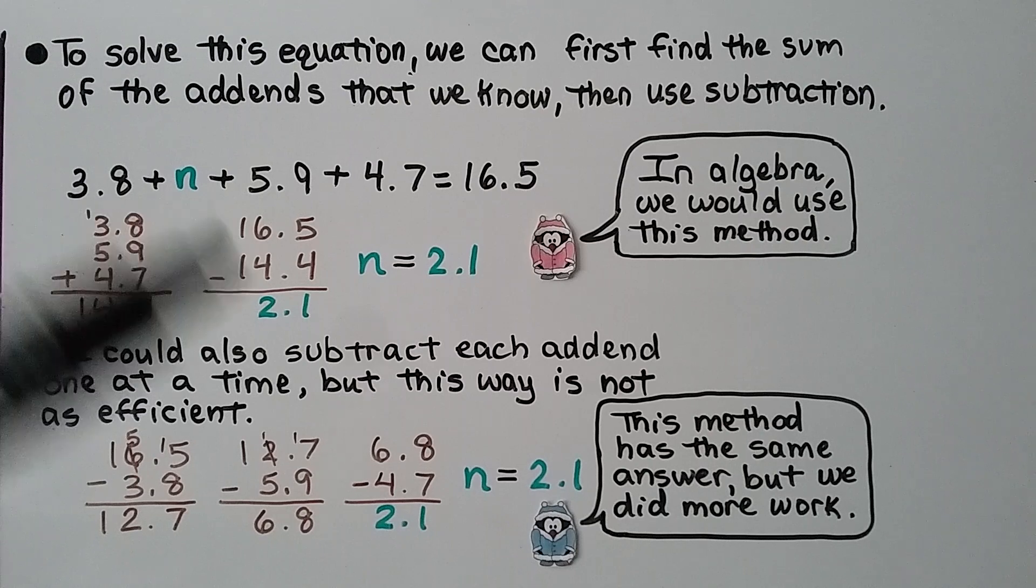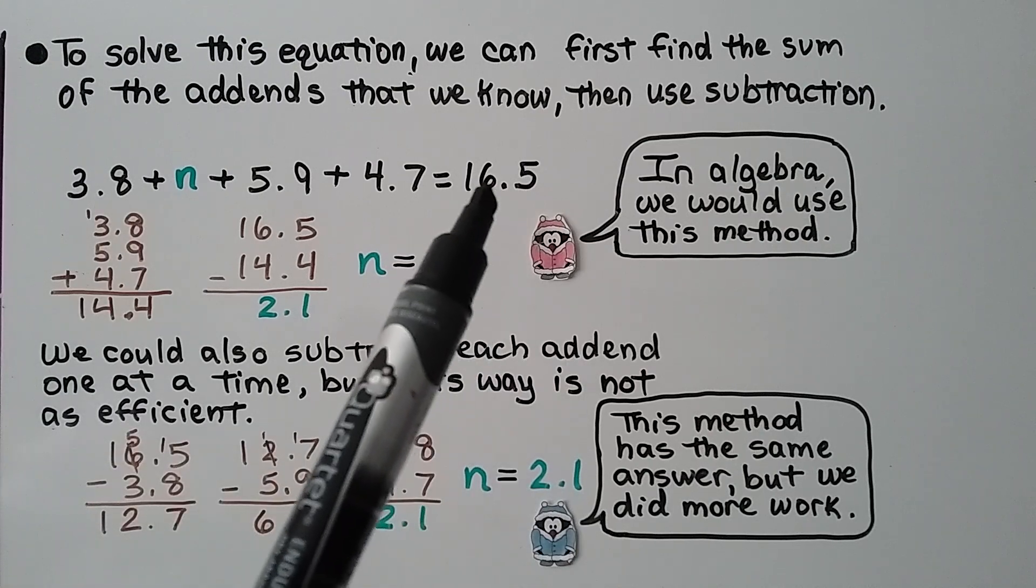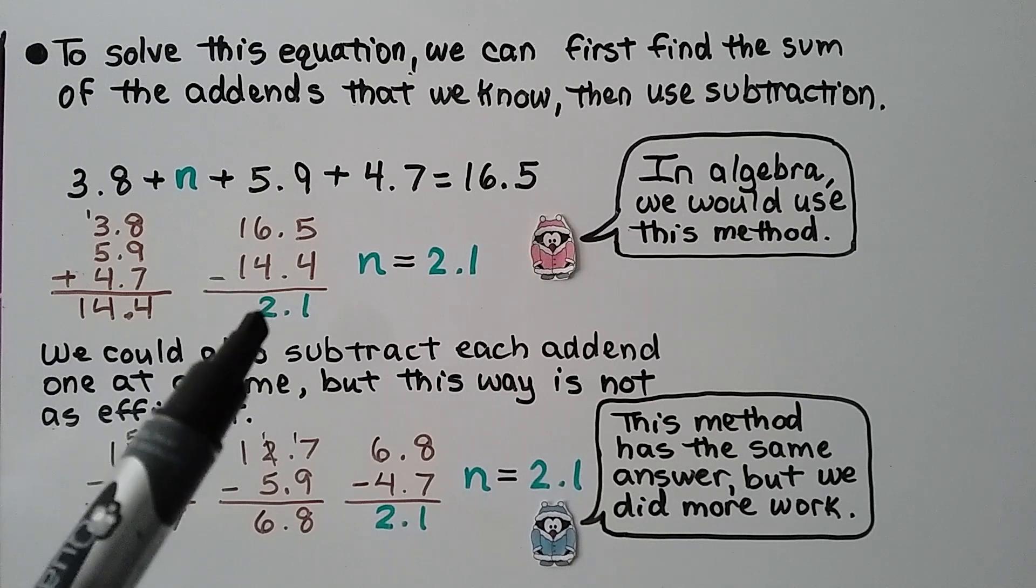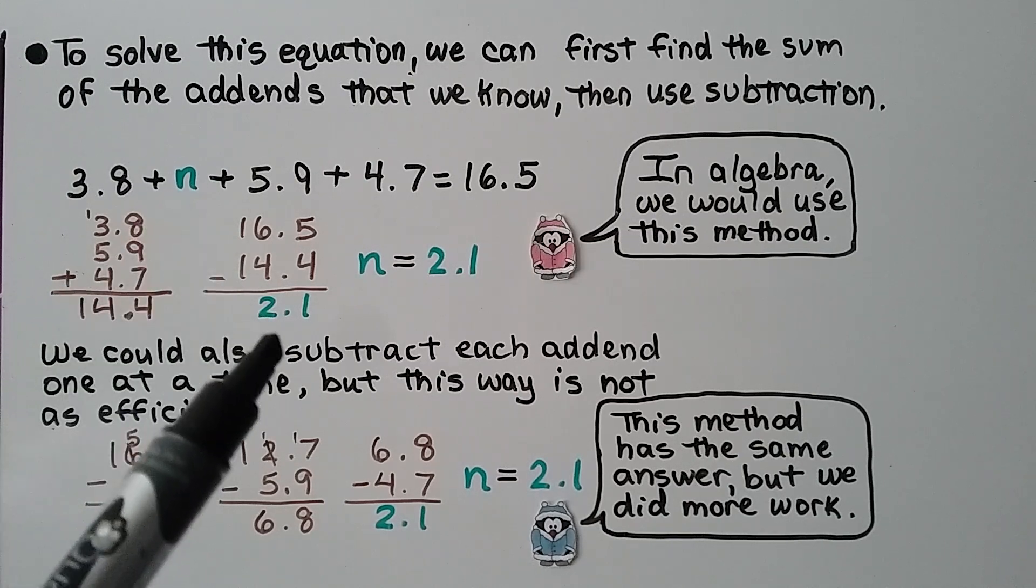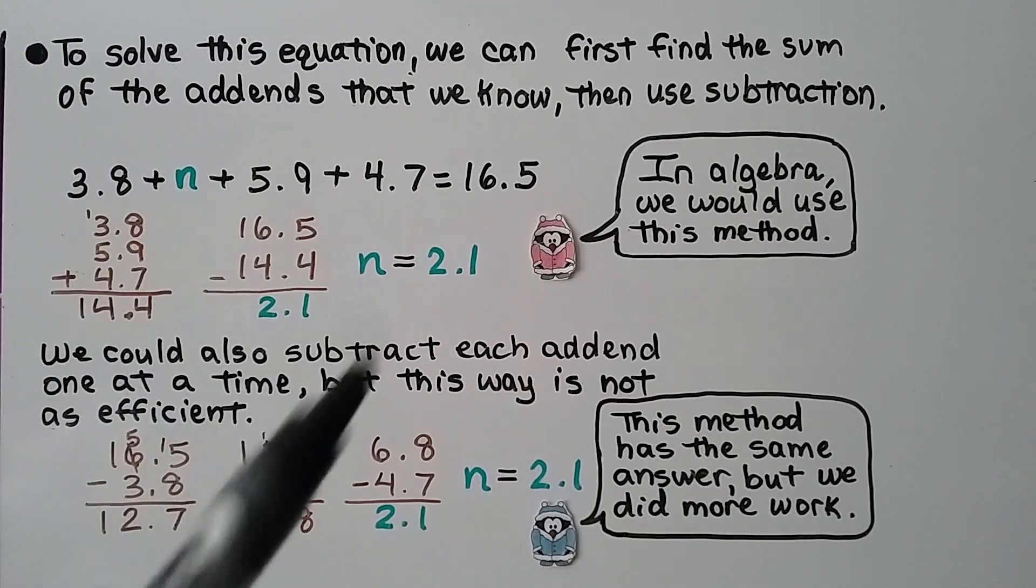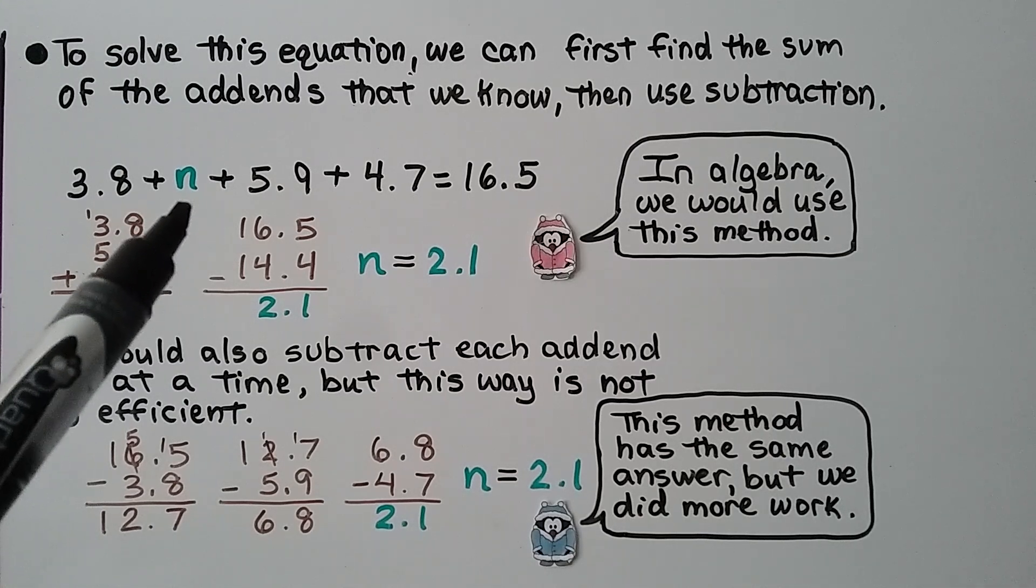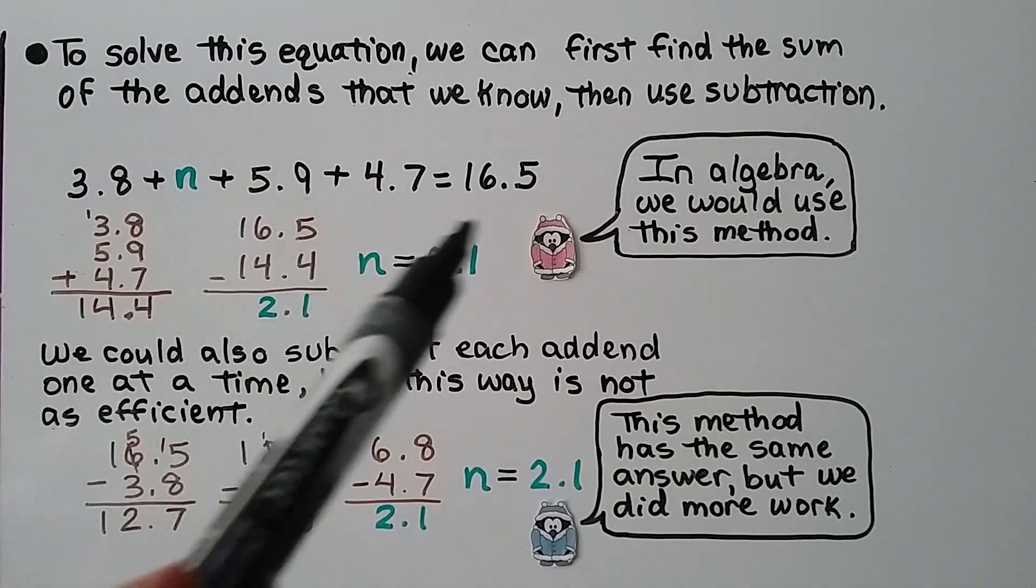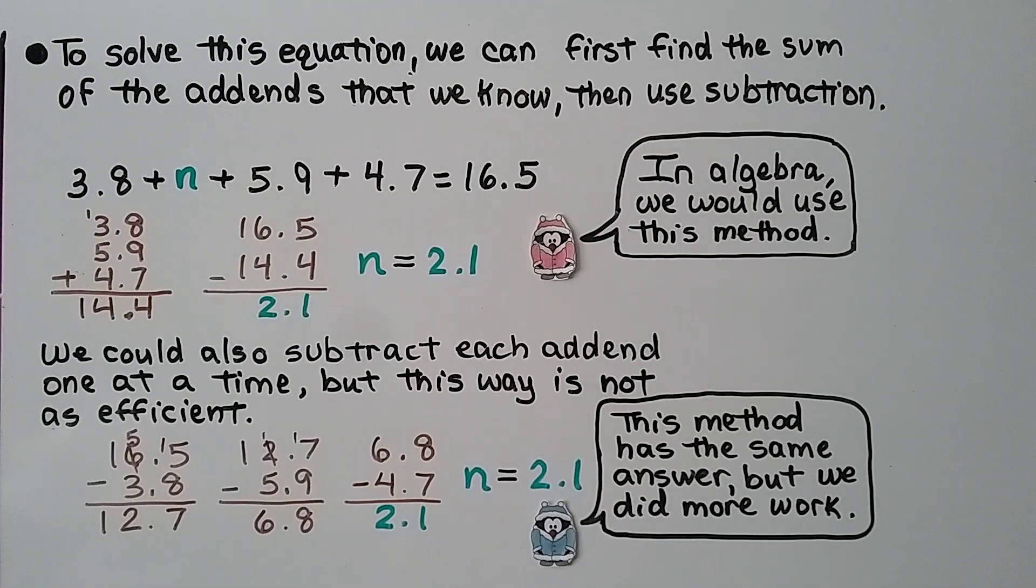And we know if we can take 16.5 and subtract 14.4, the difference will be n. n is equal to 2.1. If we had the addend 2.1 here, 2 and 1 tenths, then all of these addends would equal 16.5.